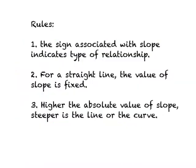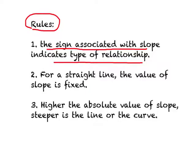Now let's review some rules about slope that will make life easier. Rule one: the sign associated with the slope indicates the type of relationship. If you get a positive value of slope, it indicates a positive relationship — as we increase the value of one variable, the value of the other increases as well; if we decrease one, the other decreases too.